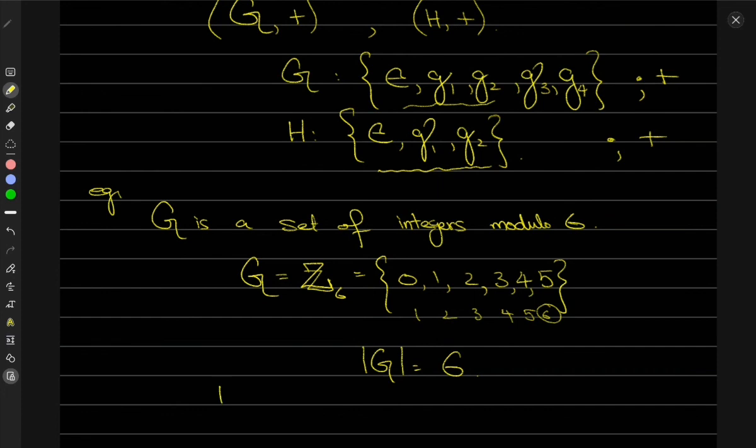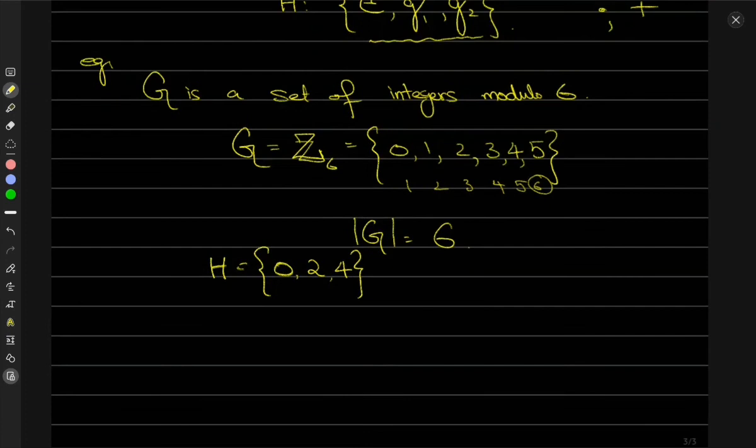The subgroup of G — call it H — would be {0, 2, 4}. The elements in H form a group with the same operation as G, all under addition modulo 6.